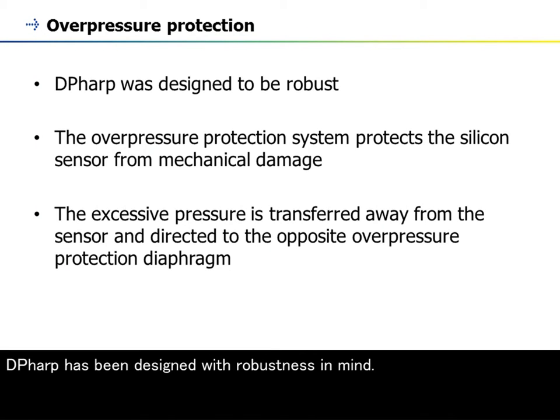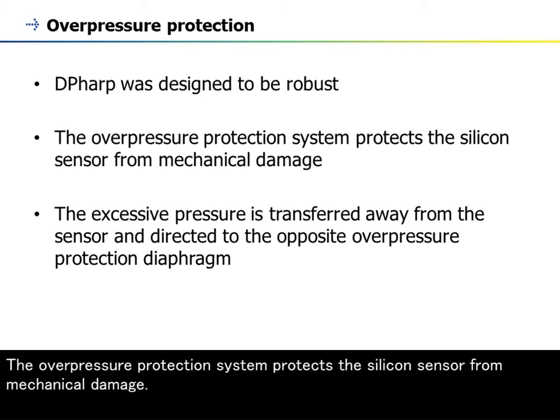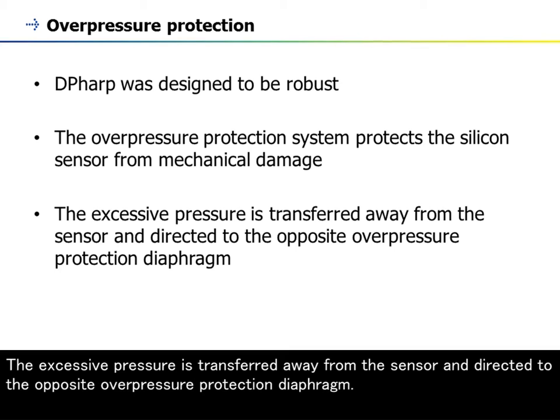DP-HARP has been designed with robustness in mind. The overpressure protection system protects the silicon sensor from mechanical damage. The excessive pressure is transferred away from the sensor and directed to the opposite overpressure protection diaphragm.